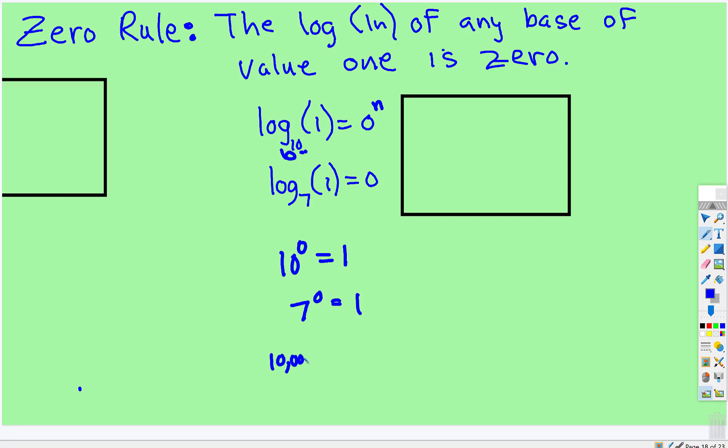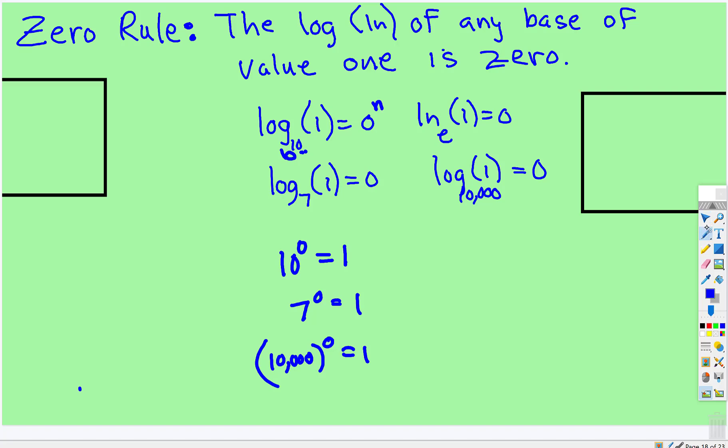We could put 10 million in here - to the zero power is one. So regardless of the base, even for natural log... I said 10 million, but that's clearly 10,000. Let me put 10 million in here. Sorry about that, that's ridiculous.